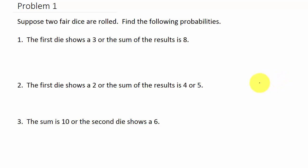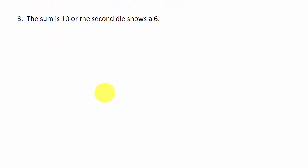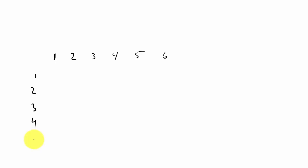The first thing we need to do is write out a sample space. If you've watched my previous probability videos, I showed how to draw out the sample space for two dice. We have the first die showing 1, 2, 3, 4, 5, and 6, and the second die showing 1, 2, 3, 4, 5, and 6.